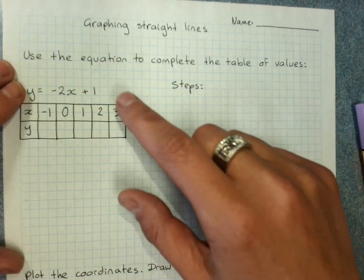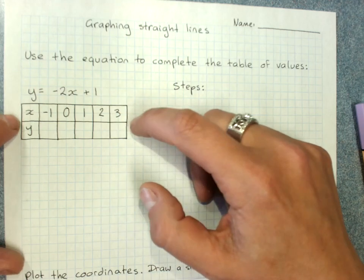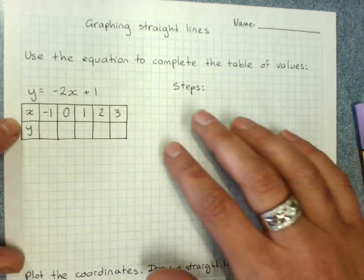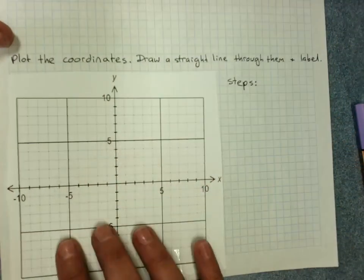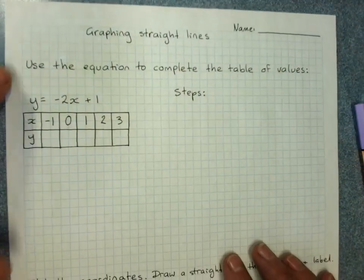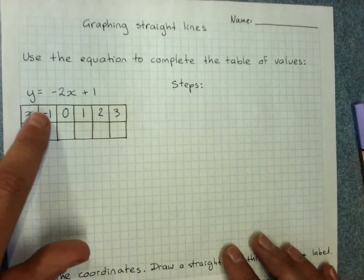We work out how to graph them by using the equation to make a table of values. And the table of values gives us a set of coordinates which we plot on a number plane and that makes the straight line. And every straight line has its own equation.